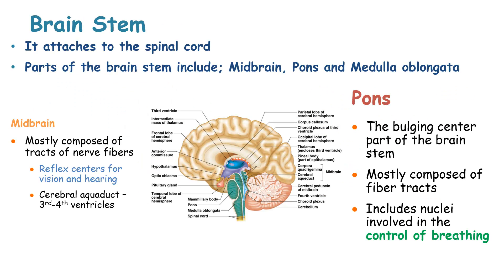The midbrain is most commonly comprised of tracts of nerve fibers and acts as a reflex center for vision and hearing. The pons is the bulging center part of the brain stem, mostly composed of fiber tracts, and includes nuclei that are involved in controlling breathing.